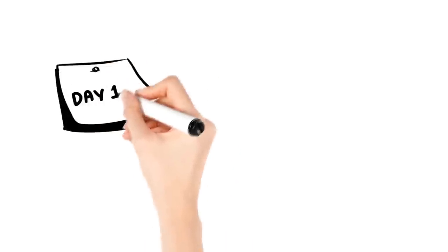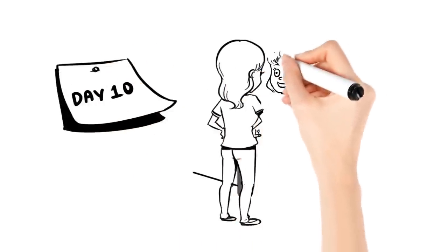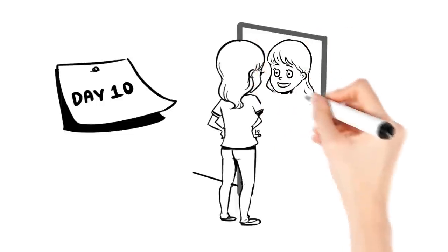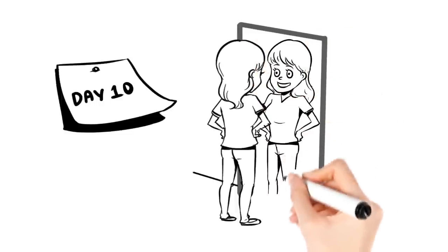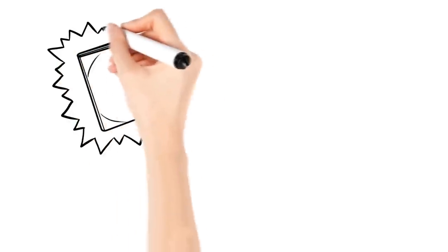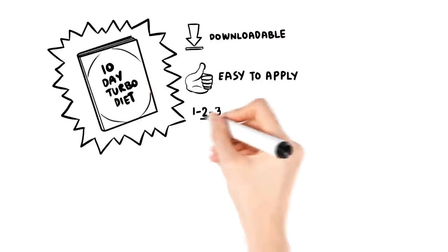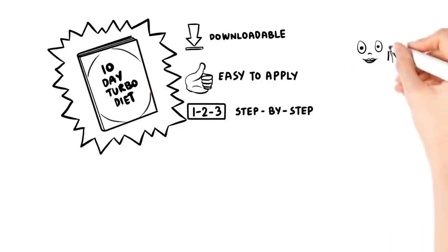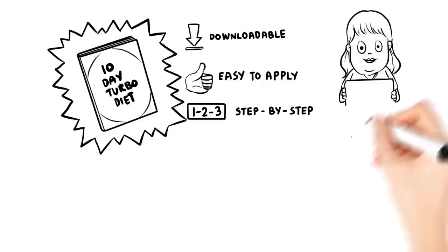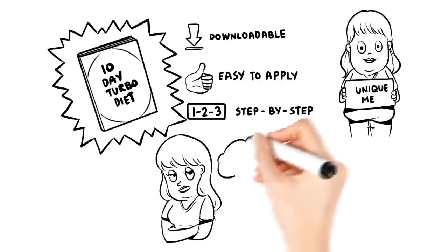After just your first application of the 10-day turbo diet, you'll be able to look in the mirror and see the new, skinnier, healthier you dropping anywhere between 8 and 14 pounds of stubborn body fat in the 10 days that just passed. The 10-day turbo diet is an instantly downloadable, easy-to-apply, step-by-step guide that helps you calculate your exact sweet spot to activate fat mobilization virtually on command. This is a one-of-a-kind rapid weight loss program for a one-of-a-kind you.